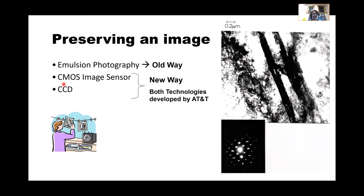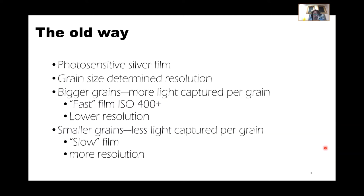There are two flavors of electronic image sensors: CCDs and CMOS. Our transmission electron microscope on the second floor still uses a CCD — a charge coupled device. The CMOS image sensor is what I'm using to record this lecture; the camera on my tablet and the cameras on the back of my phone are all CMOS image sensors. CMOS and CCD were developed by AT&T — Bell Labs.